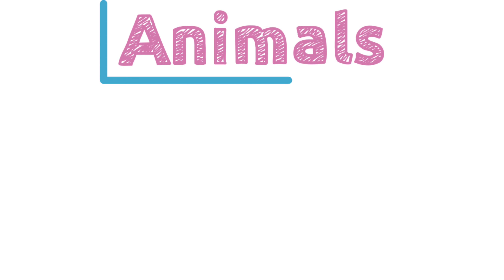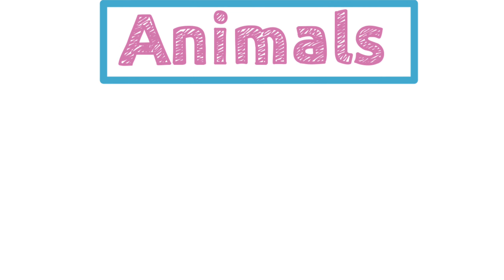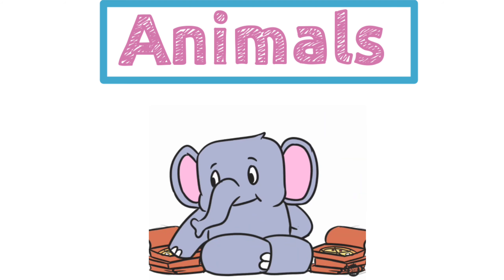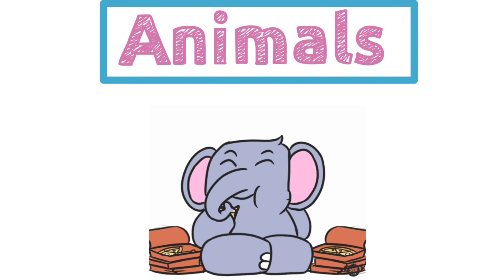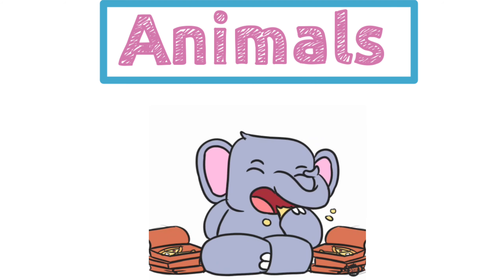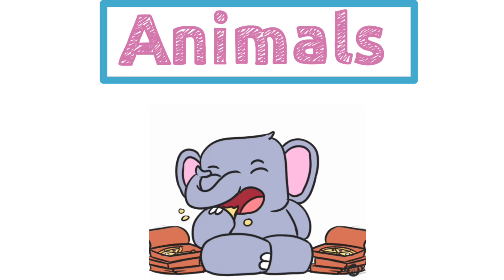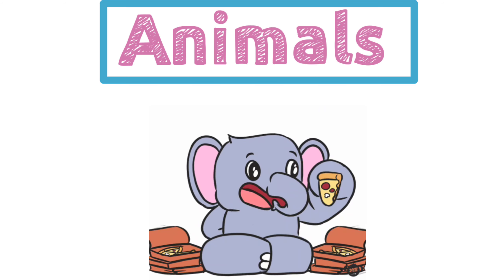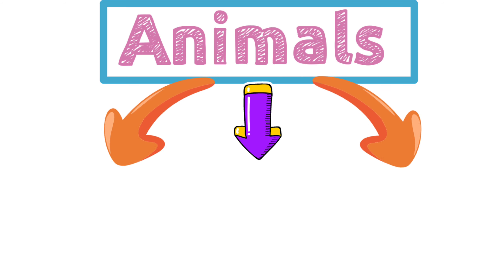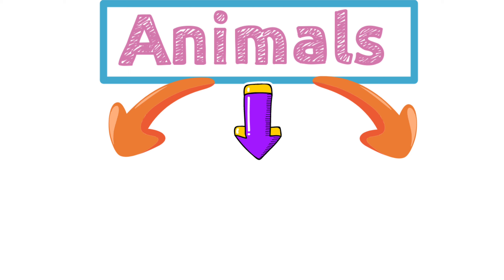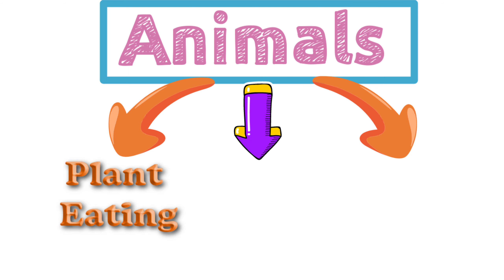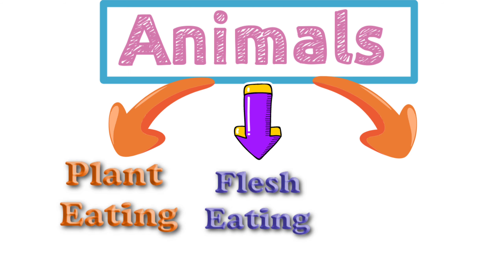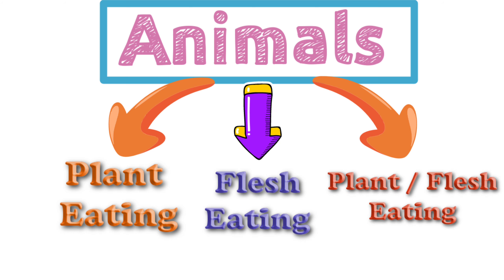Do you know animals are divided into three groups according to the type of food they eat? So let's learn about the different categories of animals. There are three categories: plant eating animals, flesh eating animals, and both plant and flesh eating animals.